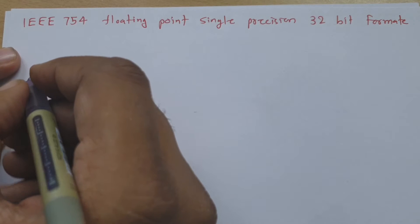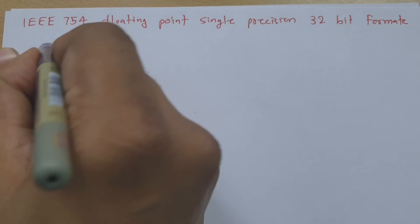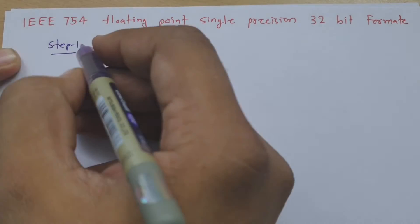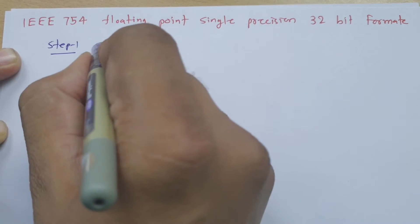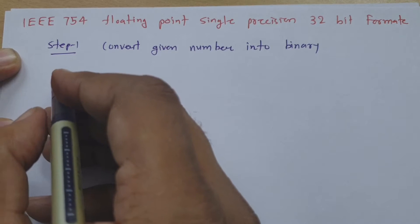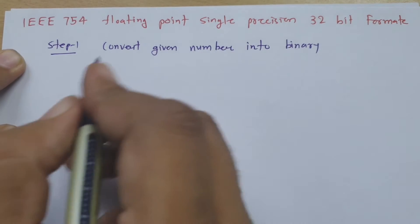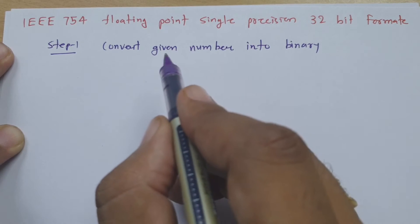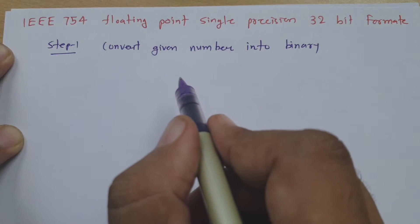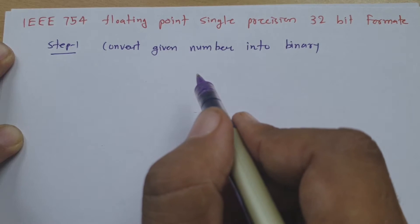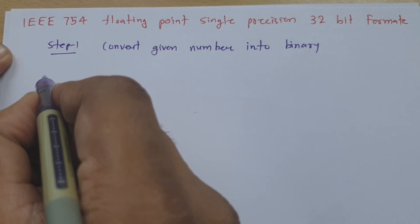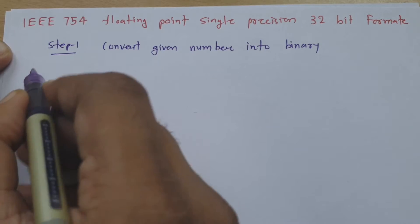Step one is to convert the given number into binary. Next, step two is to represent the given binary number into scientific notation. So once you convert the given number into binary, you can represent it in scientific notation. I will explain this by example so it will be more clear. Let me first mention all the steps.